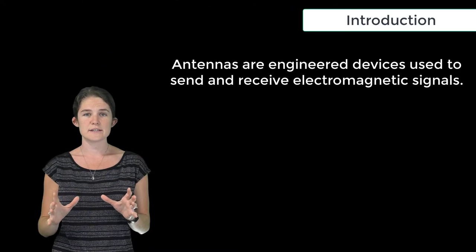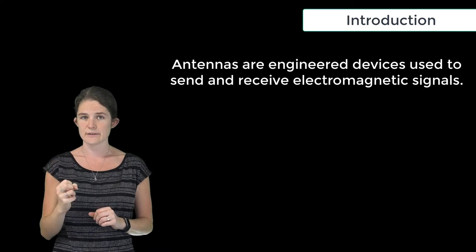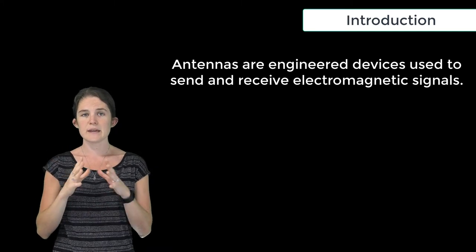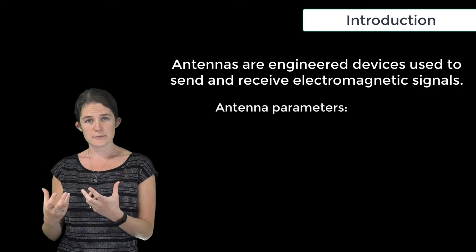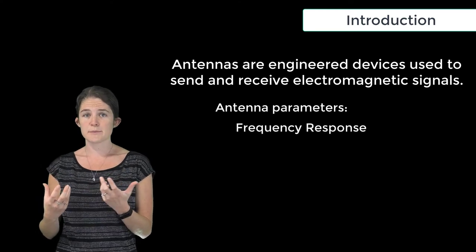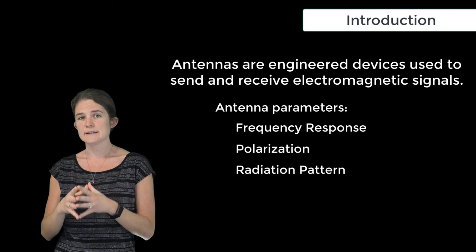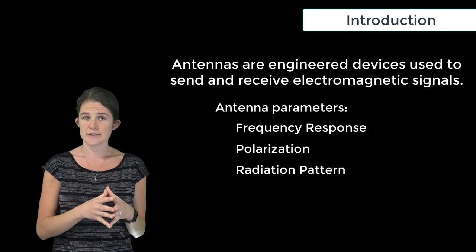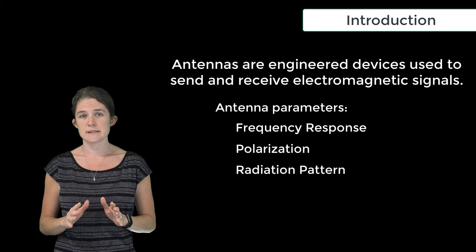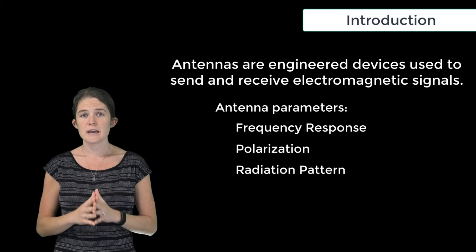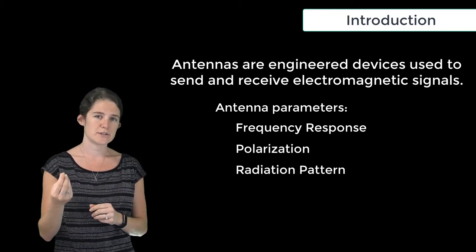Antennas are engineered devices used to send and receive electromagnetic signals. Each antenna has a unique set of characteristics, such as its frequency response, polarization and radiation pattern, which are set by its size and topology. It is important to know general characteristics of common antenna topologies in order to be able to choose the proper topology for any particular application.